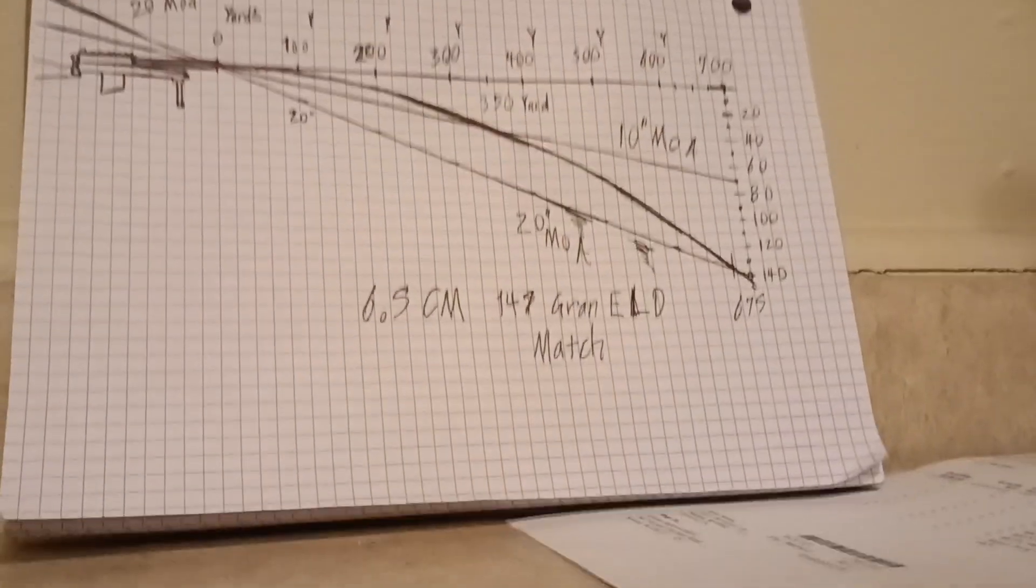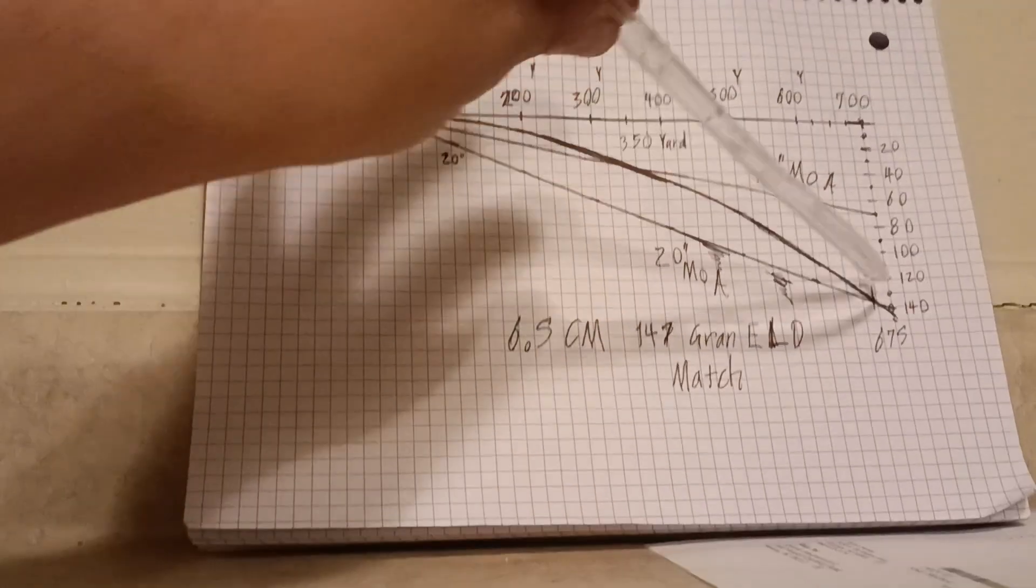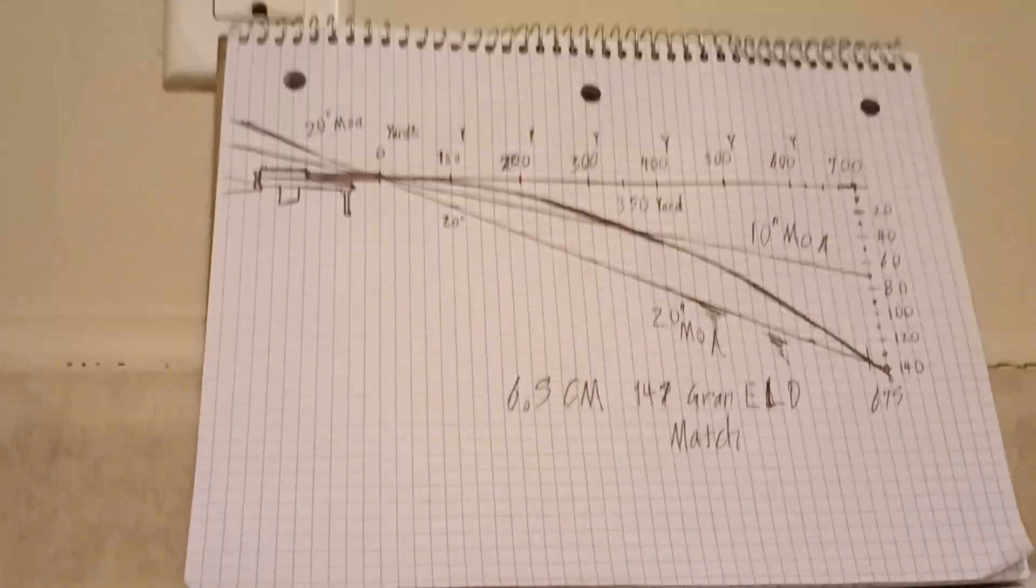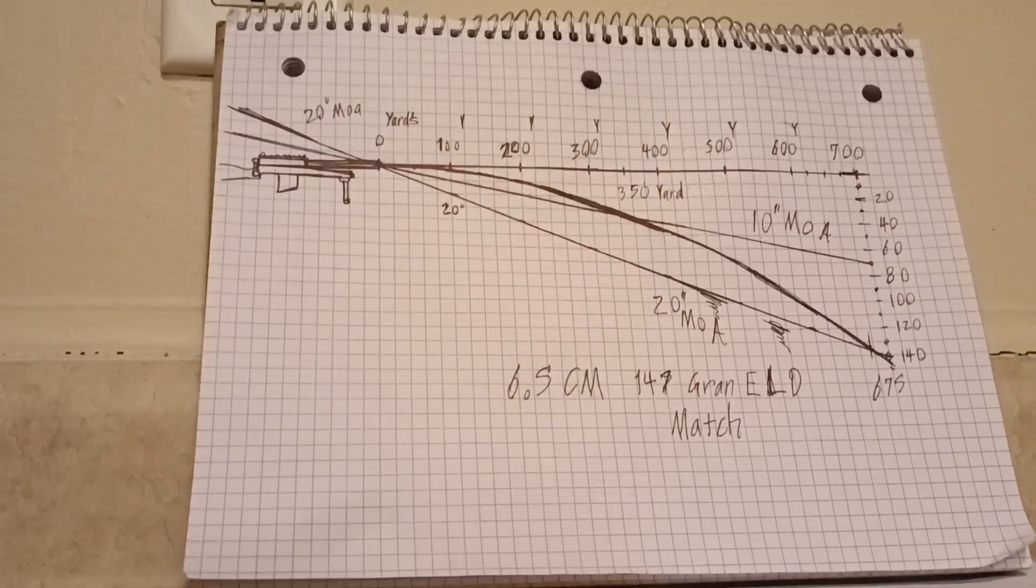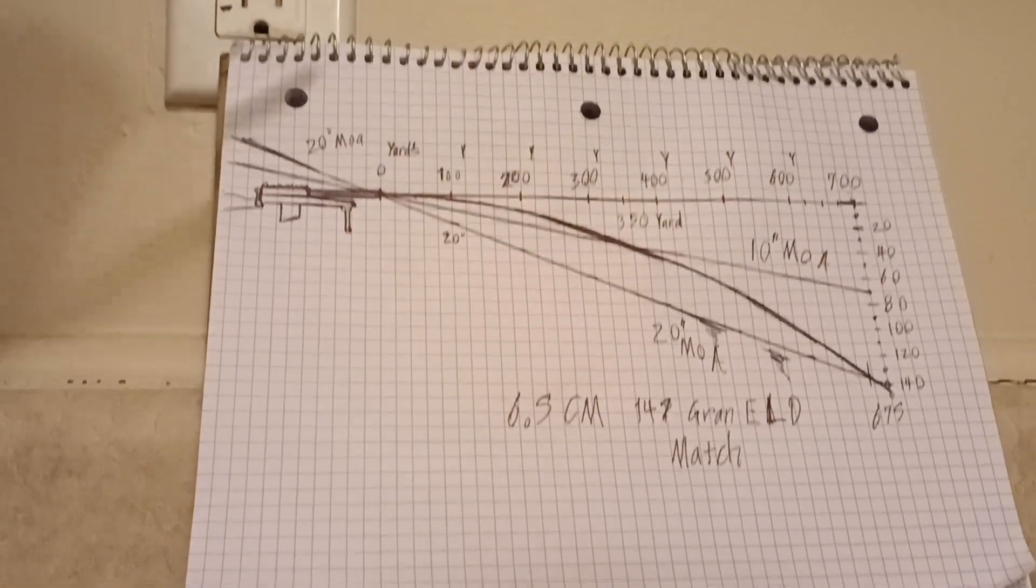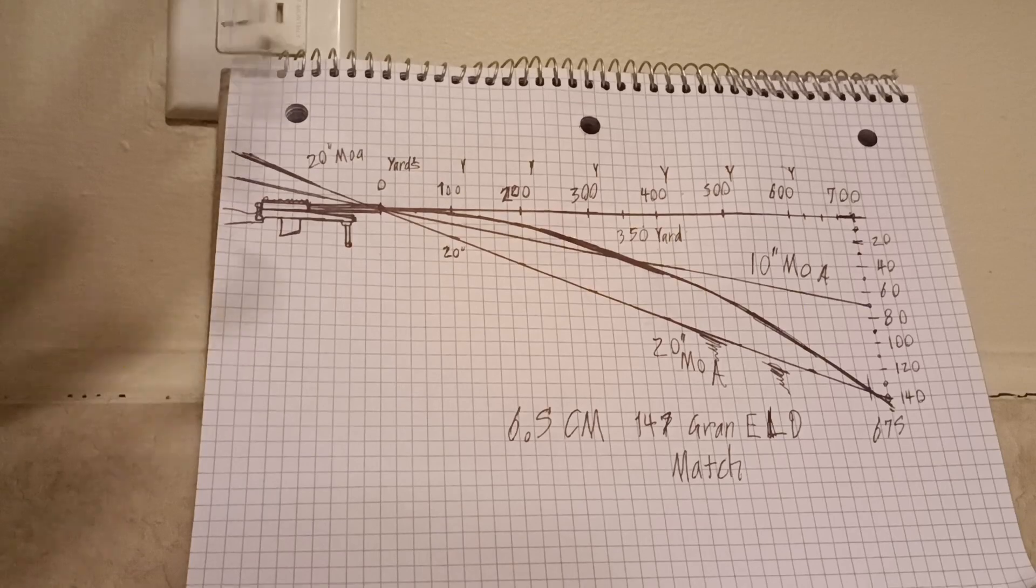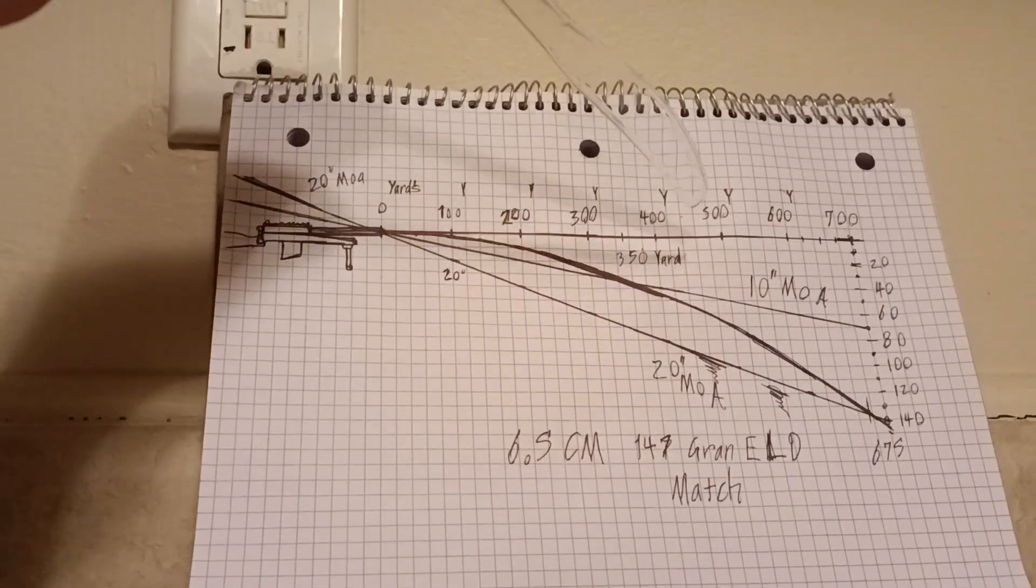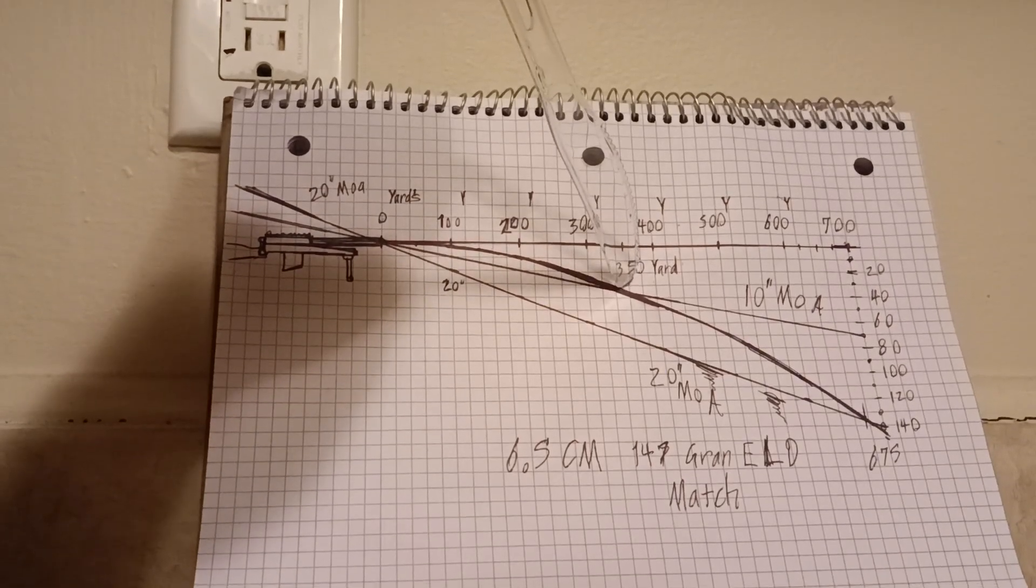You're going to get a bit better scope clarity simply because all your lenses and glass are perfectly aligned, which should help with overall optical quality, maybe not even enough to notice, but everything being perfectly aligned should help. You can actually see the 10 MOA mount on this graph intersects right at roughly 350 yards.